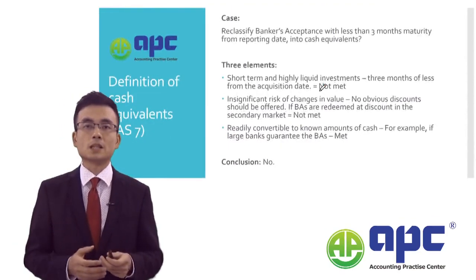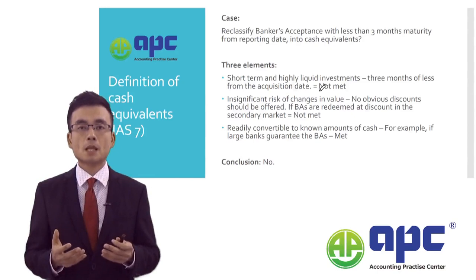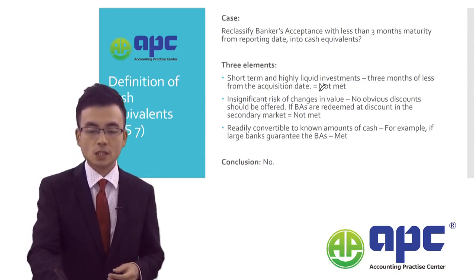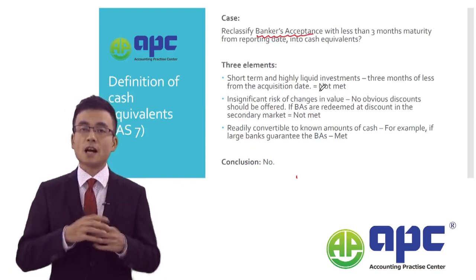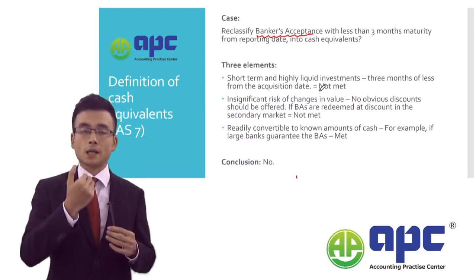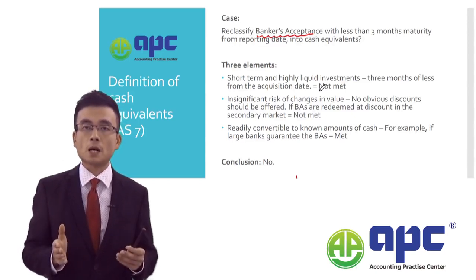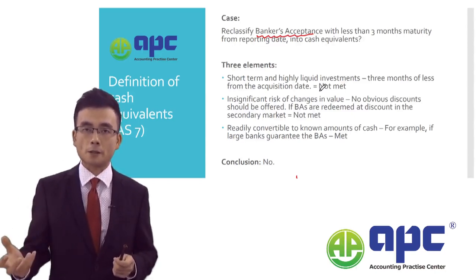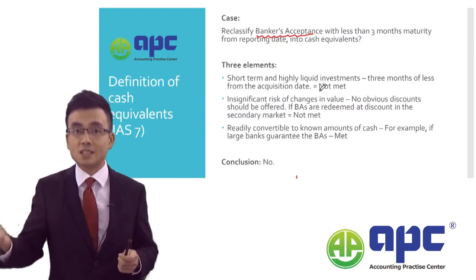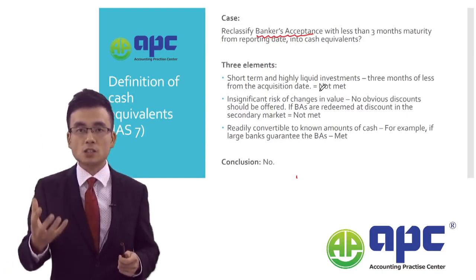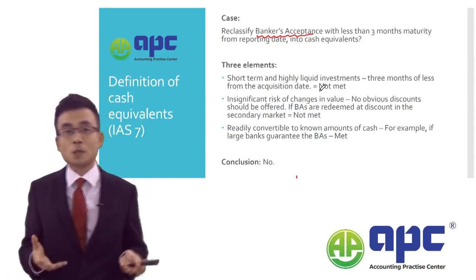A German company's finance director asked me a question, because in her company there was a banker's acceptance. From a seller's point of view, you sell goods and the buyer pays you not with cash but with a piece of paper guaranteed by a bank. At some point in the future — for example, six months later — you can use that paper to convert it into cash. That's how banker's acceptance works.